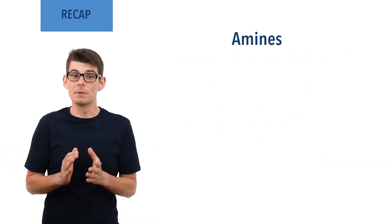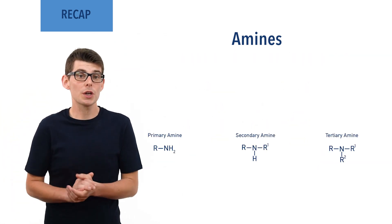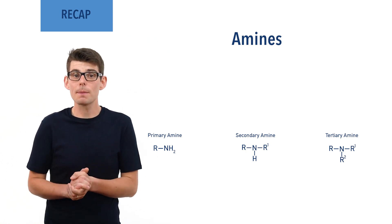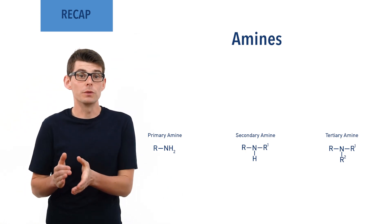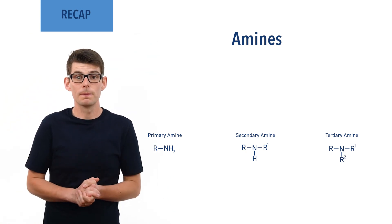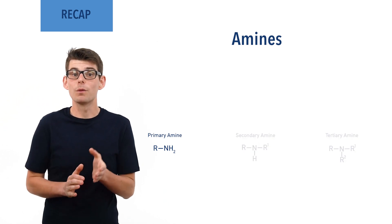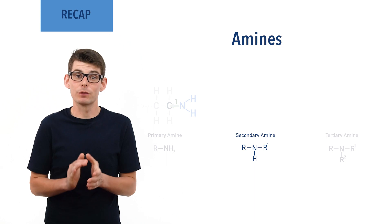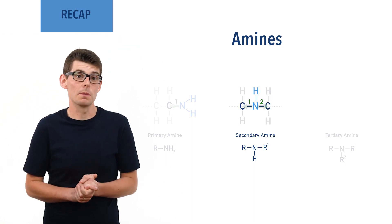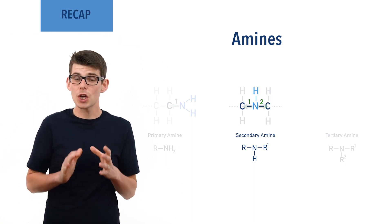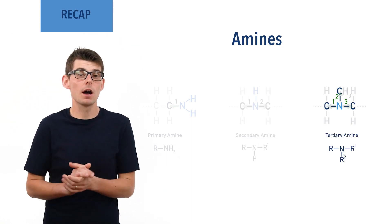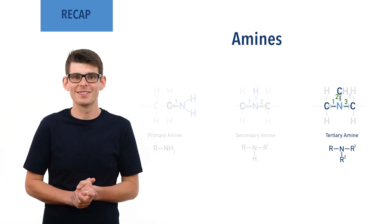Amines can be primary, secondary, or tertiary, depending on the number of carbon groups bonded to the nitrogen. Primary amines have one carbon group bonded to the nitrogen, secondary amines have two carbon groups bonded to the nitrogen, and tertiary amines have three carbon groups bonded to the nitrogen.